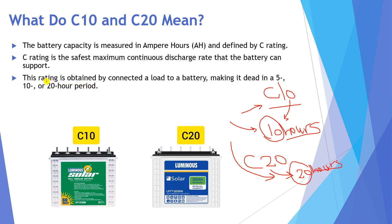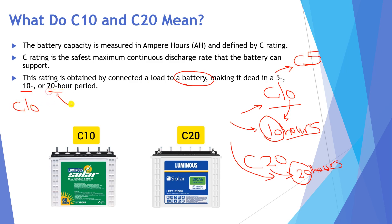This rating is obtained by connecting a load to the battery — C10, C20, C5, whatever — and making it fully discharge in 5, 10, or 20 hours. If a battery connected to a certain load goes dead in 5 hours, it is C5. If it goes dead in 10 hours, it is C10. If it goes dead in 20 hours, it is C20.